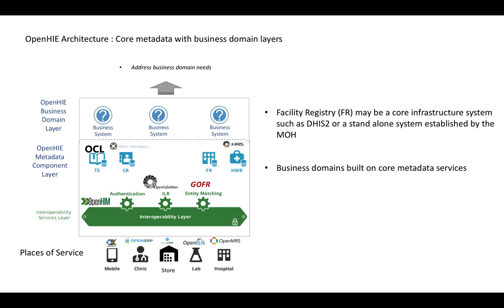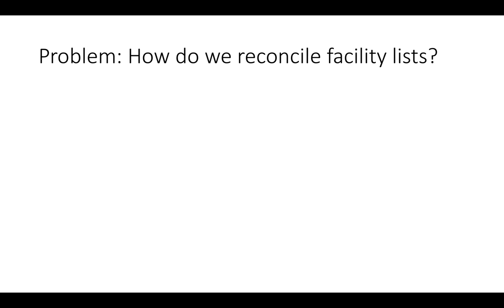Again, there are a number of example systems that can be used at this level. Next we look at the business domain layer which is built upon the core metadata services of OpenHIE and which can receive and interact with the systems at the places of service. We'll be looking at a couple of different examples of business domain layers on the upcoming slides. Before we do that, we start with a common problem: how do we reconcile facility lists?